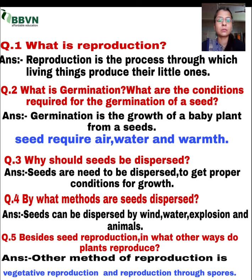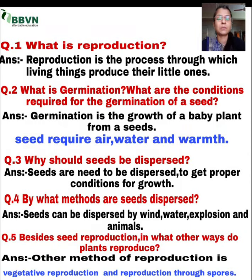Water — inko, matlab jo seed hota hai, usko hard part ko soft karne ke liye — baby plant ko bahar nikalne ke liye seed ko soft hone ki zaroorat hoti hai, toh usse water ki bhi zaroorat hoti hai. Warmth — numi ki wajah se jo seed coat hota hai, jo hard covering part hota hai, woh soft ho jata hai, toh usse numi ki bhi zaroorat hoti hai. So air, water, warmth, sunlight — yeh aisi cheezein hain jo ek seed ki germination ke liye zaruri hoti hain.